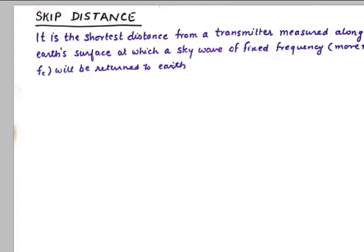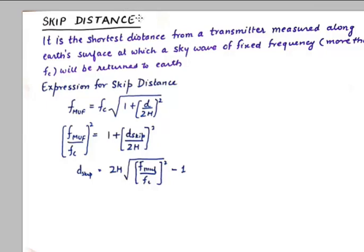Now let's look at the expression for skip distance. To understand the expression for skip distance, we need to take help of the expression that we derived in the previous tutorial. F MUF - we derived the expression for F MUF in terms of critical frequency, skip distance, and virtual height. So this is what we have in hand. So taking this FC on the left hand side and squaring it, this under root goes away, and taking this one on the other side, so I get the skip distance to be twice of H under root of F MUF over FC squared minus one. This will be the shortest distance from a transmitter for a fixed frequency that will be more than FC.